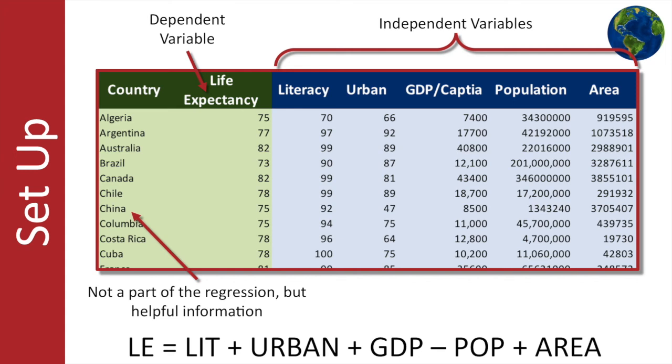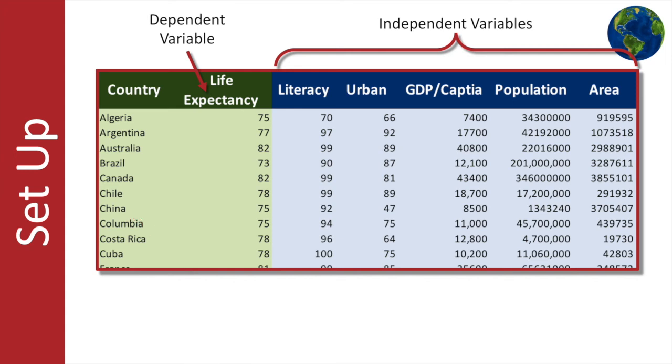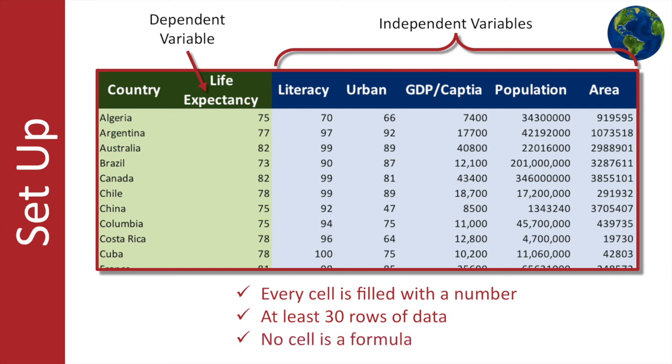Now when it comes to the spreadsheet, we need to remember three very important details. The first is that every cell is filled with a number—there are no blank cells. Number two, although you can't see it here, you'll need at least 30 rows of data to really get a good analysis. And number three, none of the cells can be populated with a formula. Each cell needs to be a typed-in number.